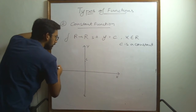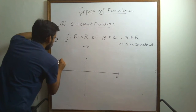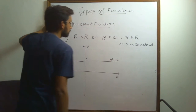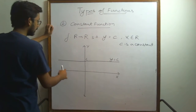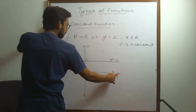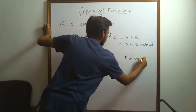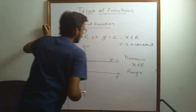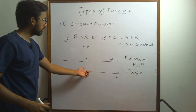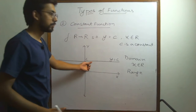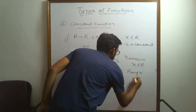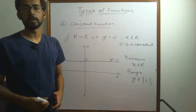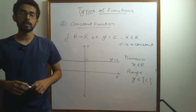The graph of this function is a straight line parallel to the x-axis. For all real values of x, the value of y is always c. This function is defined for all real numbers, so the domain is the set of real numbers. For the range, since the image is always the constant c for all real numbers, the range is simply the singleton set containing c.